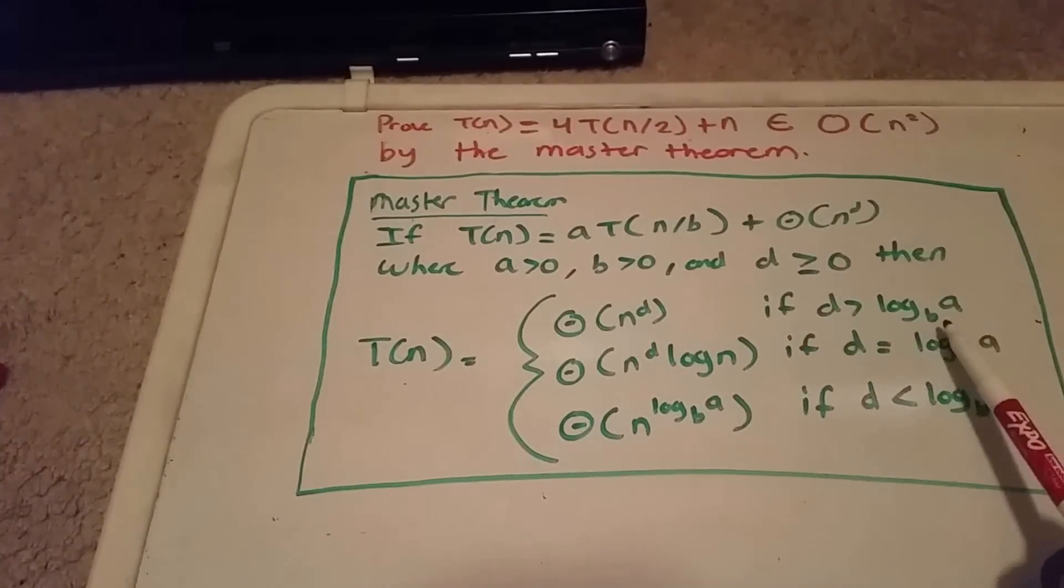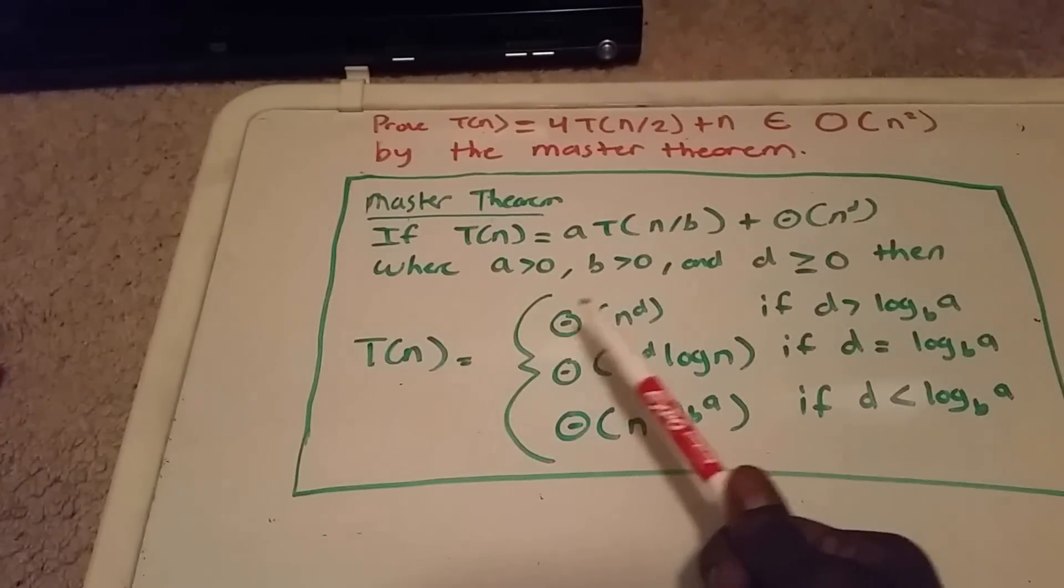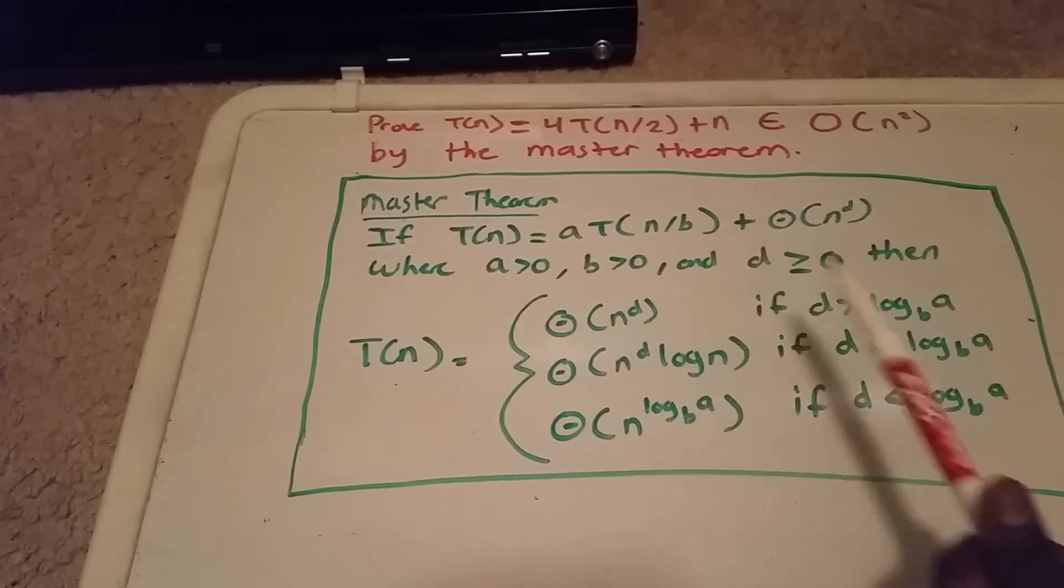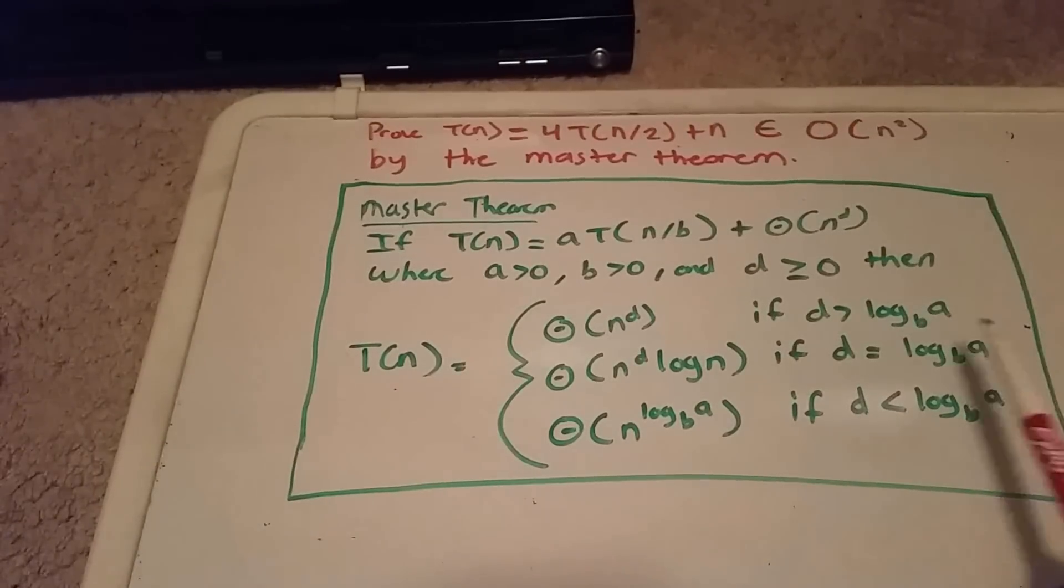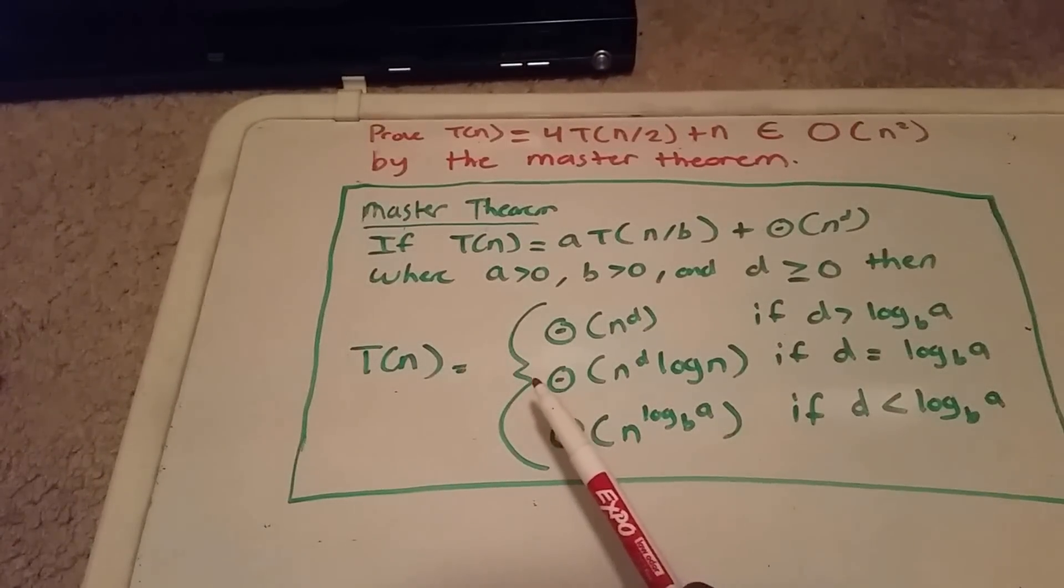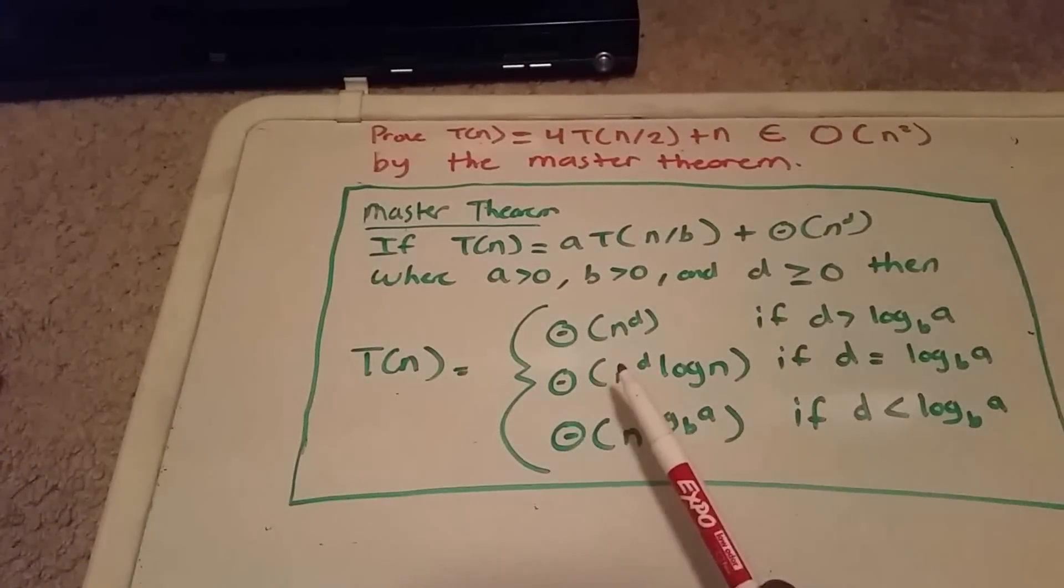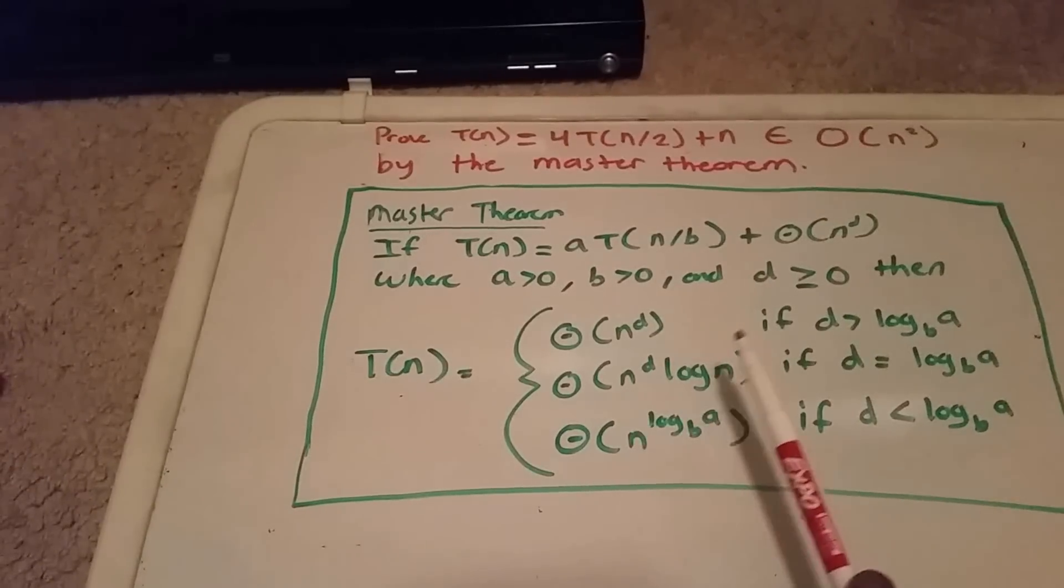If d is greater than log base b of a, then it's theta of n to the power of d. If d equals log base b of a, then T is theta of n to the d times log n.